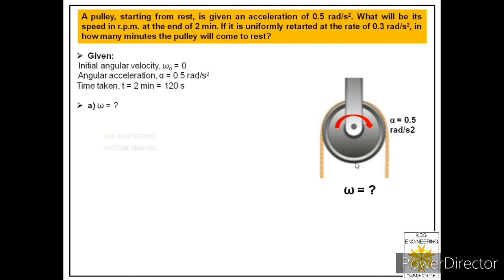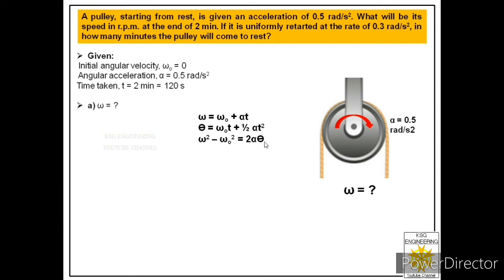This is a case of uniformly accelerated motion, so the standard kinematic equations apply. We need to find omega. Looking at the available equations, one requires theta which we don't have, so we cannot use that equation. We will use the first equation: omega equals omega naught plus alpha times t.